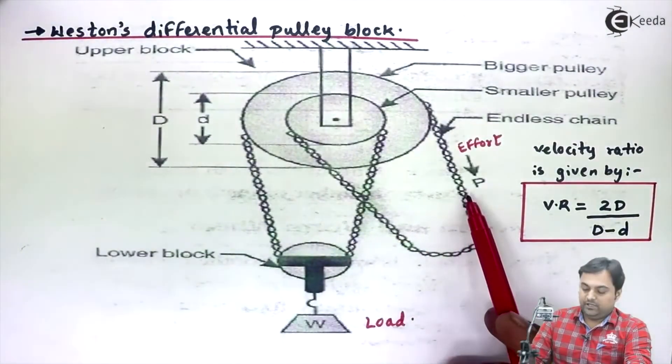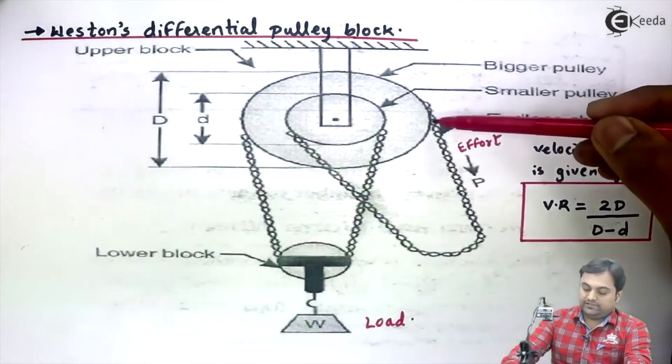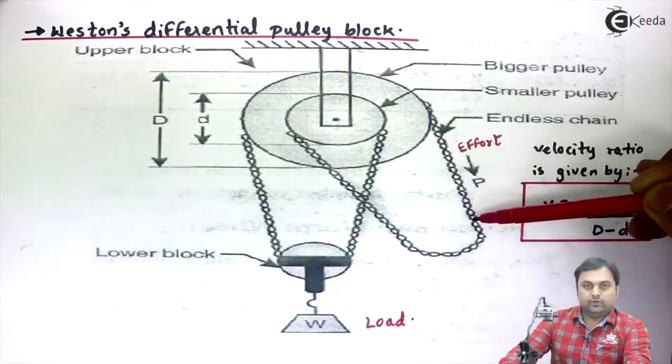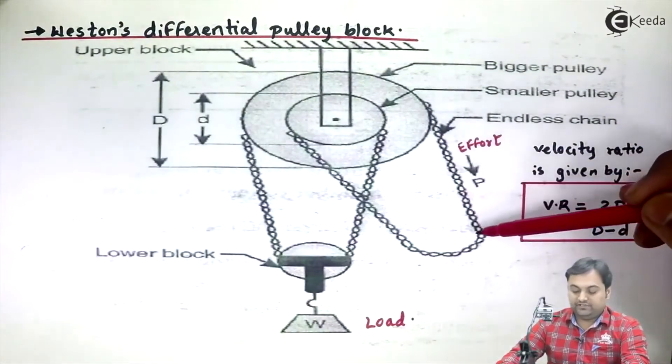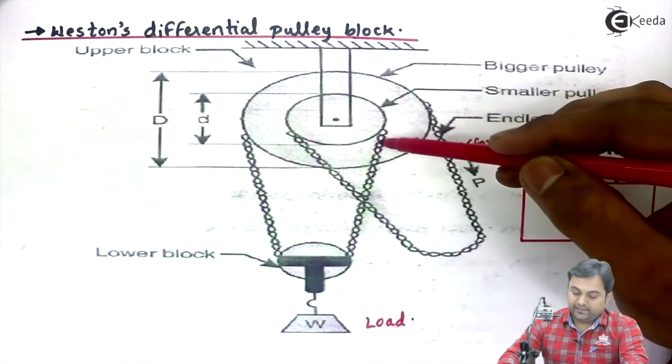This effort can be applied with the help of hand—that is, we pull this chain in the downward direction. When we pull this chain down, this end rotates.